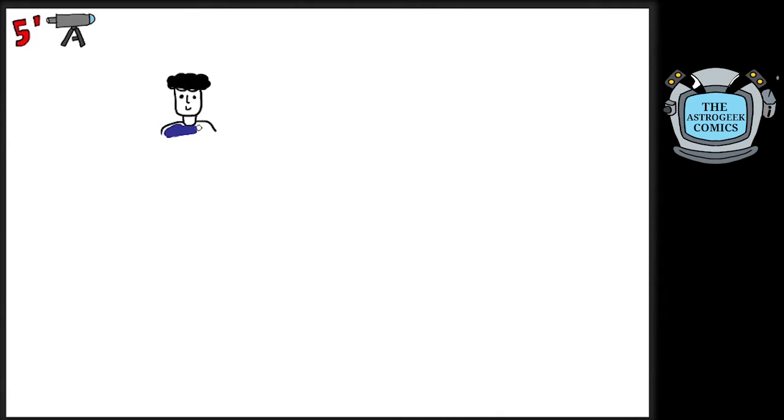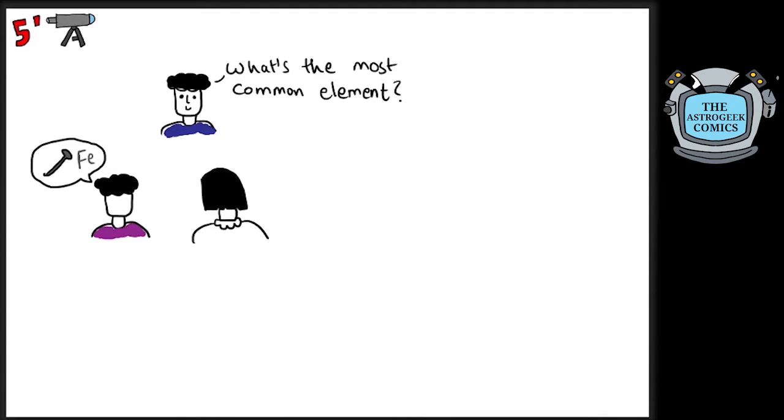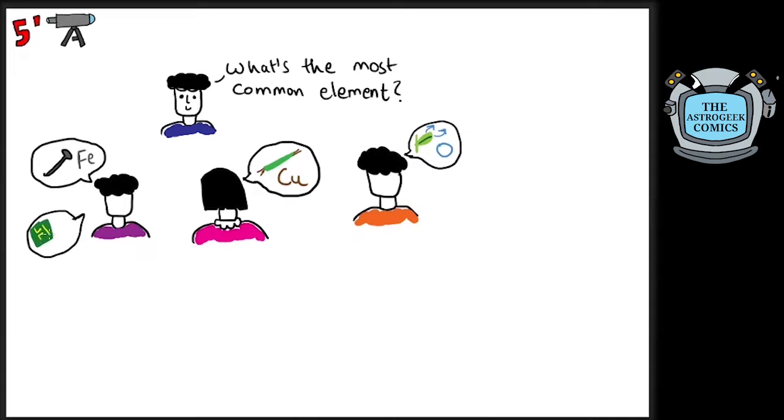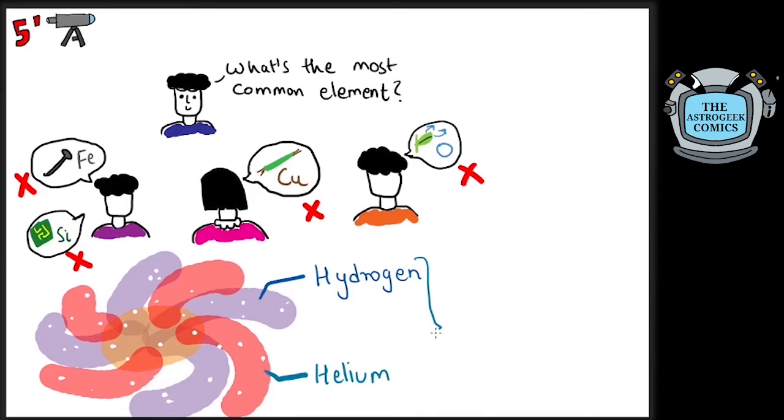Your daily experience with the world may perhaps make you think that the most common substance in the universe is iron or copper or oxygen or maybe silicon. But on the contrary, the two most common elements in the universe are hydrogen and helium.